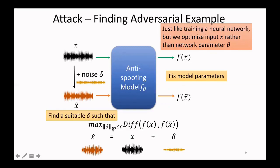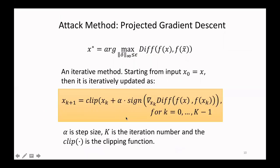So delta, the noise, shouldn't be too large. In this paper, we constrain the searching space for delta within a small infinity norm. We use Projected Gradient Descent, PGD, as the attack method. Our objective is to find X*, and we use PGD, which is an iterative method. In PGD, we start from input x0, which equals the original example X, then it is iteratively updated. In each iteration, we take the gradient of the D function with respect to X. The sign function simply takes the sign of the gradient, then we multiply it by alpha and add it to x_k. Finally, we use the clip function to project this term back into the constrained space we defined before.